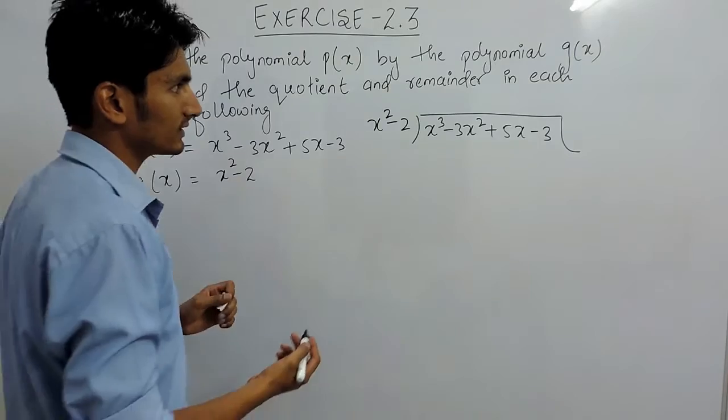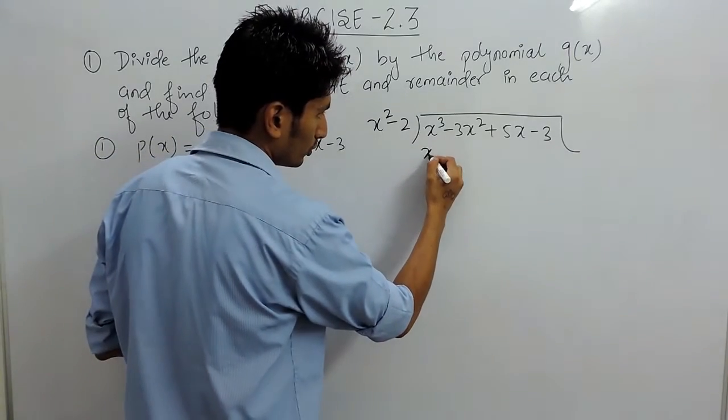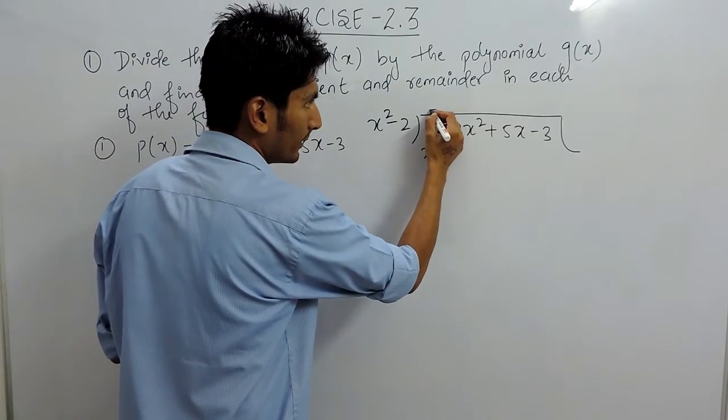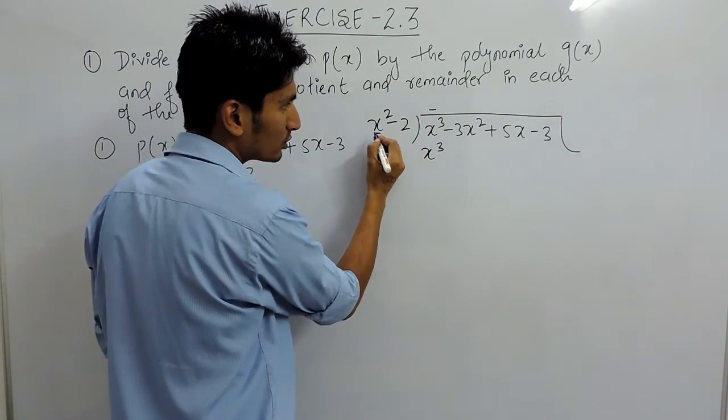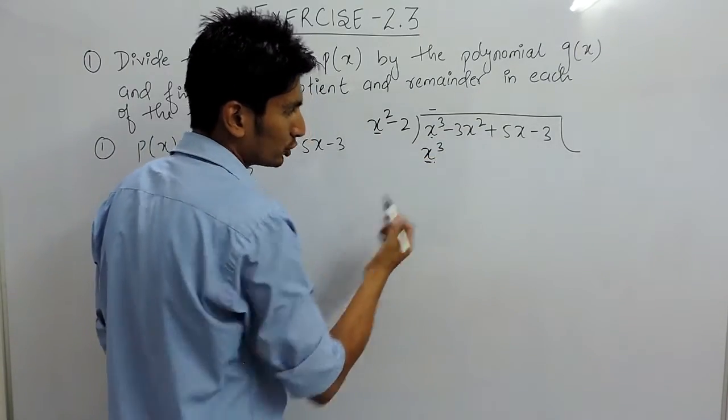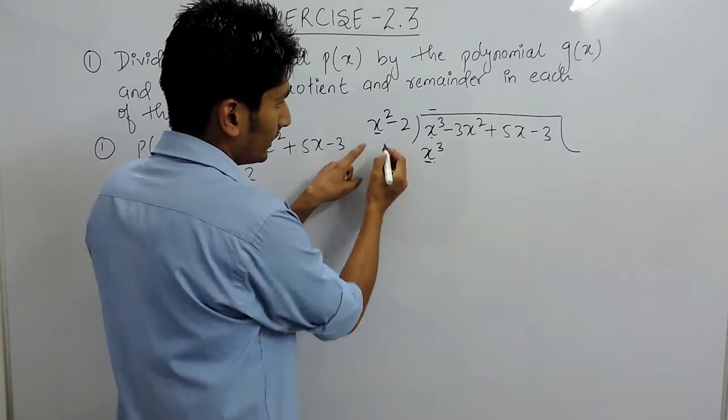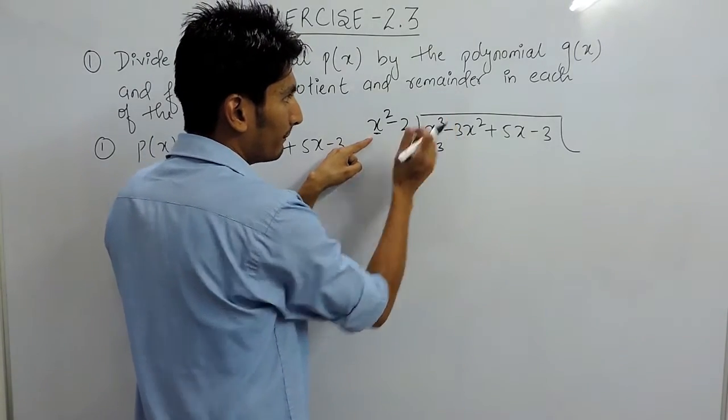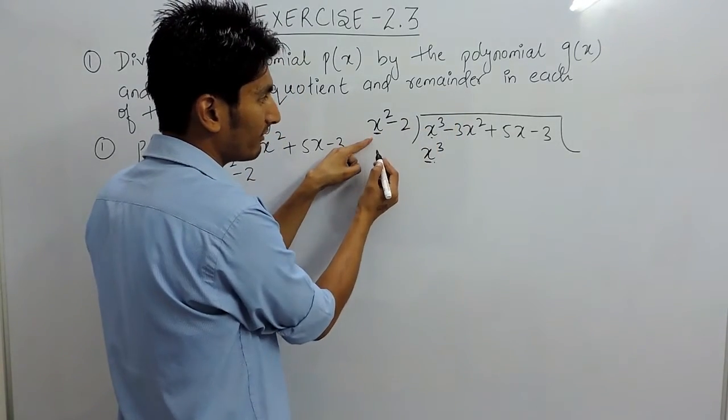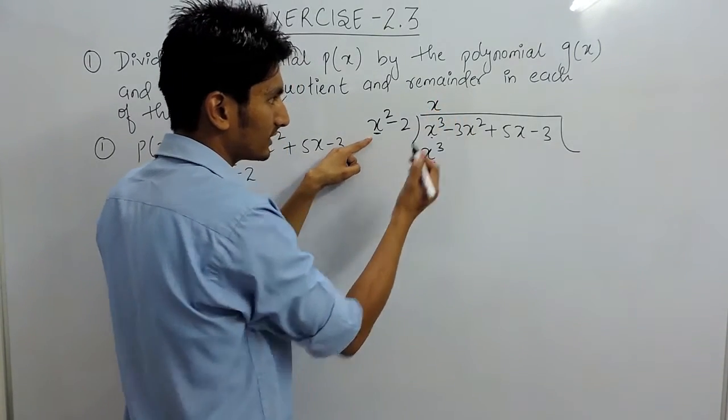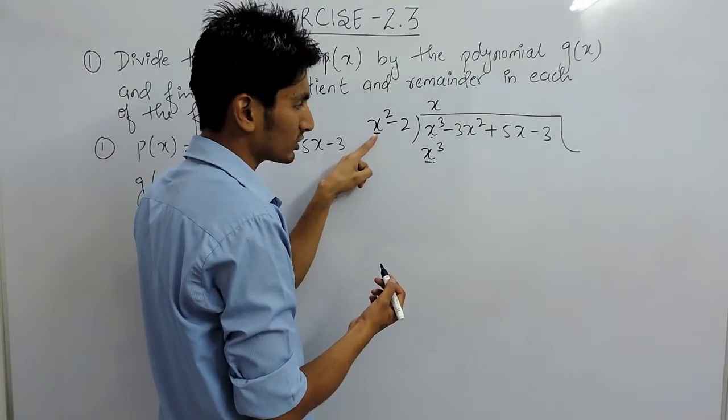To divide this, you have to think of a number that, when multiplying with x squared, makes x cubed. You already have x squared, and the number which would multiply with x squared to give x cubed is x. So x when multiplied by x squared will give x cubed.